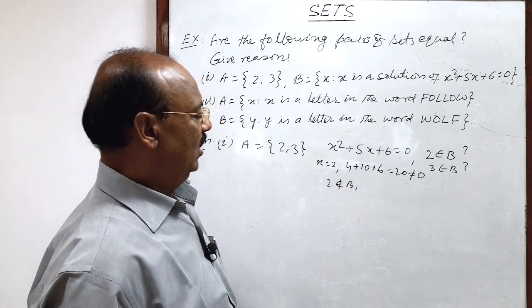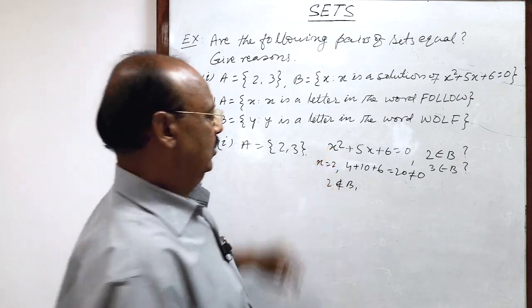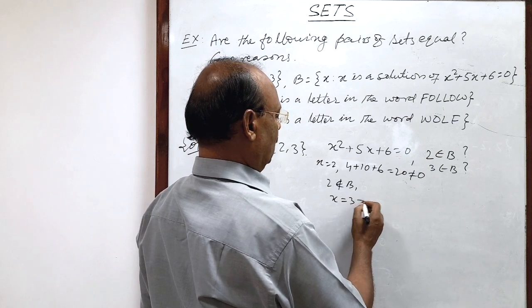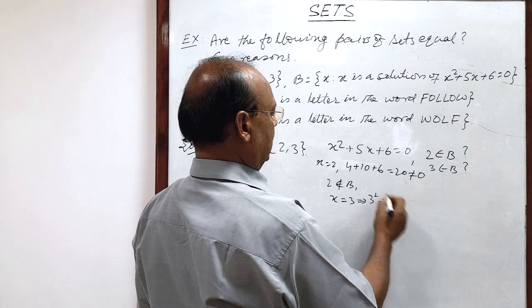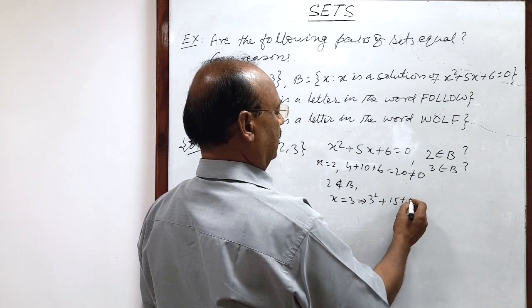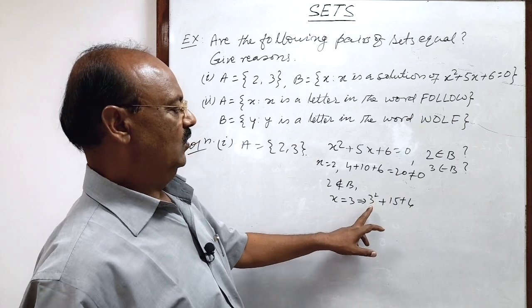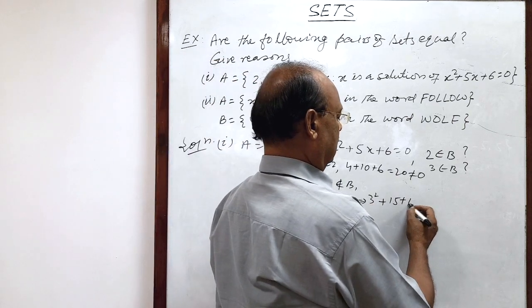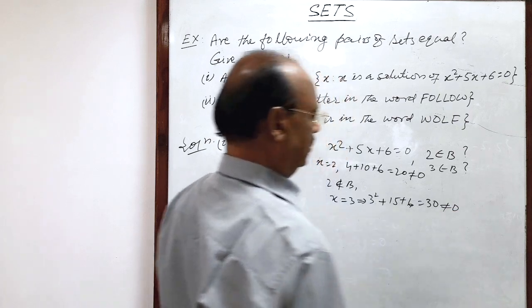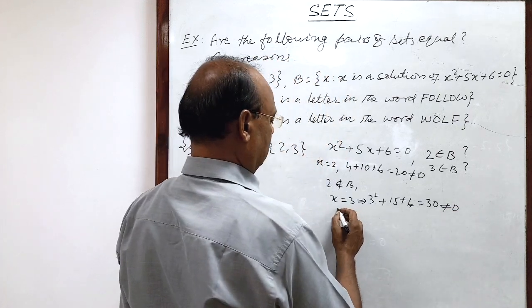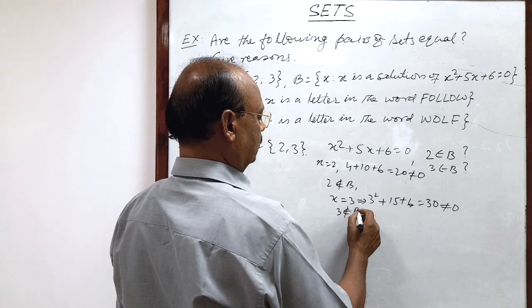Similarly, x = 3 does not satisfy this equation. Because x = 3 implies 3² plus 5 times 3, that's 15, plus 6. So we get 30, which is not equal to 0. This means this member 3 does not belong to set B.